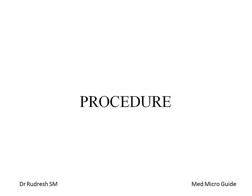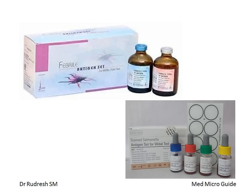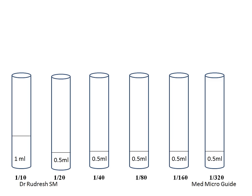For the procedure, we require fresh test serum. If there is a delay, it can be preserved at 2 to 8 degrees Celsius for up to 72 hours. Hemolyzed samples are not suitable. We need commercially available or in-house prepared O, AH, and BH antigens, normal saline, a water bath, pipettes, test tubes, and a test tube rack. Two types of tubes are used: Dreyer's tube for H agglutinins — a narrow tube with a conical bottom — and Felix tube, which is short with a round bottom.